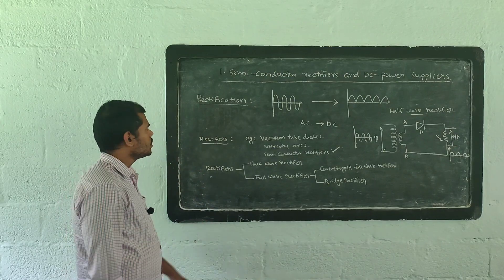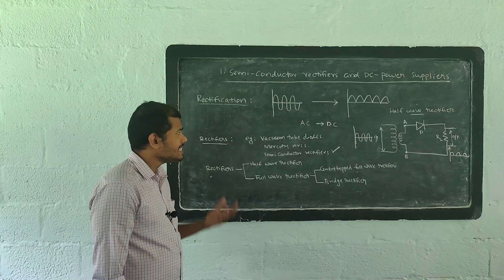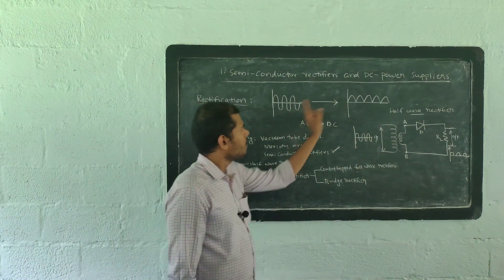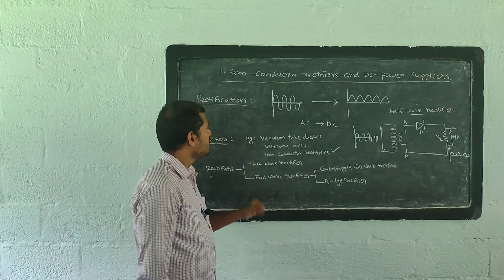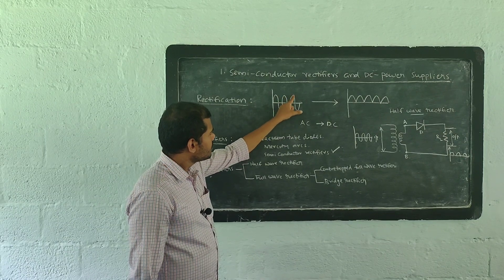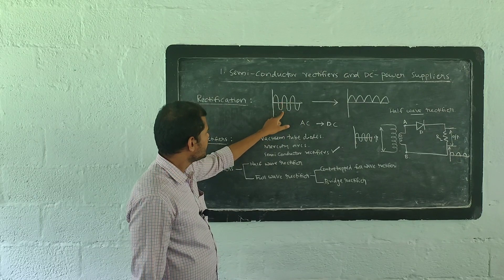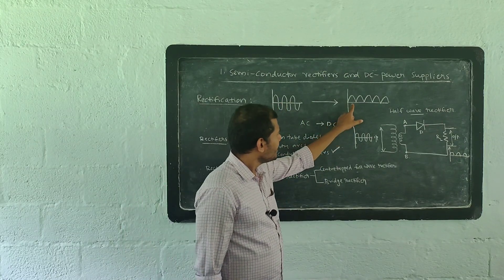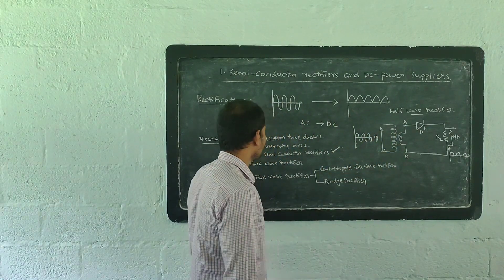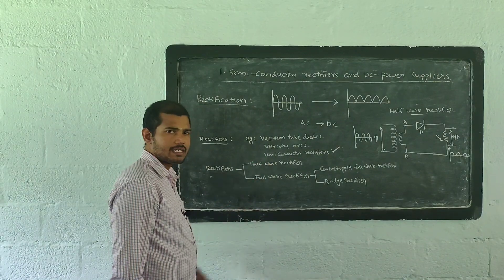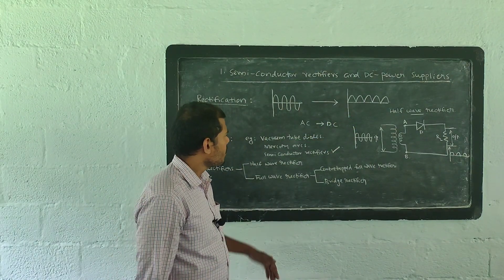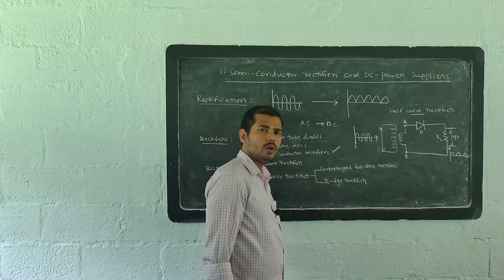Our chapter name is Semiconductor Rectifiers and DC Power Suppliers. You studied about rectifiers in lower classes. What is Rectification? Rectification is the process by which alternating current is converted into direct current. Alternating current is the current of which direction continuously changes periodically with time. Current of which direction remains constant or which flows in a single direction is known as direct current.